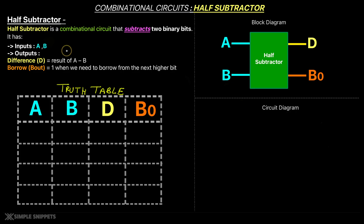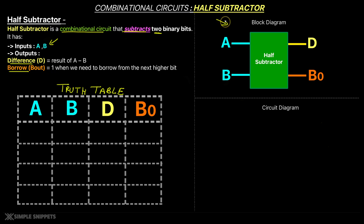A half subtractor, just like a half adder, is a combinational circuit. A combinational circuit combines multiple logic gates to achieve a certain output for a certain input. It subtracts two binary bits. It has two inputs A and B, and two outputs. In the half adder's case we had sum and carry; in the half subtractor, since we are doing subtraction, we have the difference and a borrow variable, denoted as Bout or B0. We have a block diagram showing inputs A and B on the left and outputs D and B0 on the right.